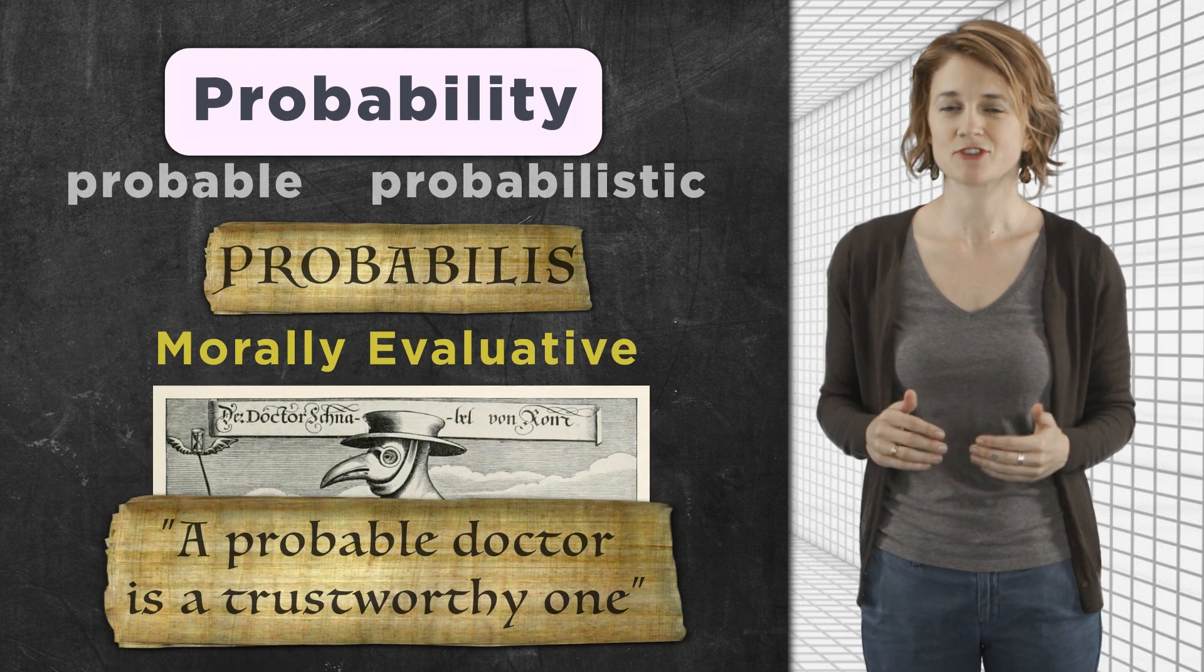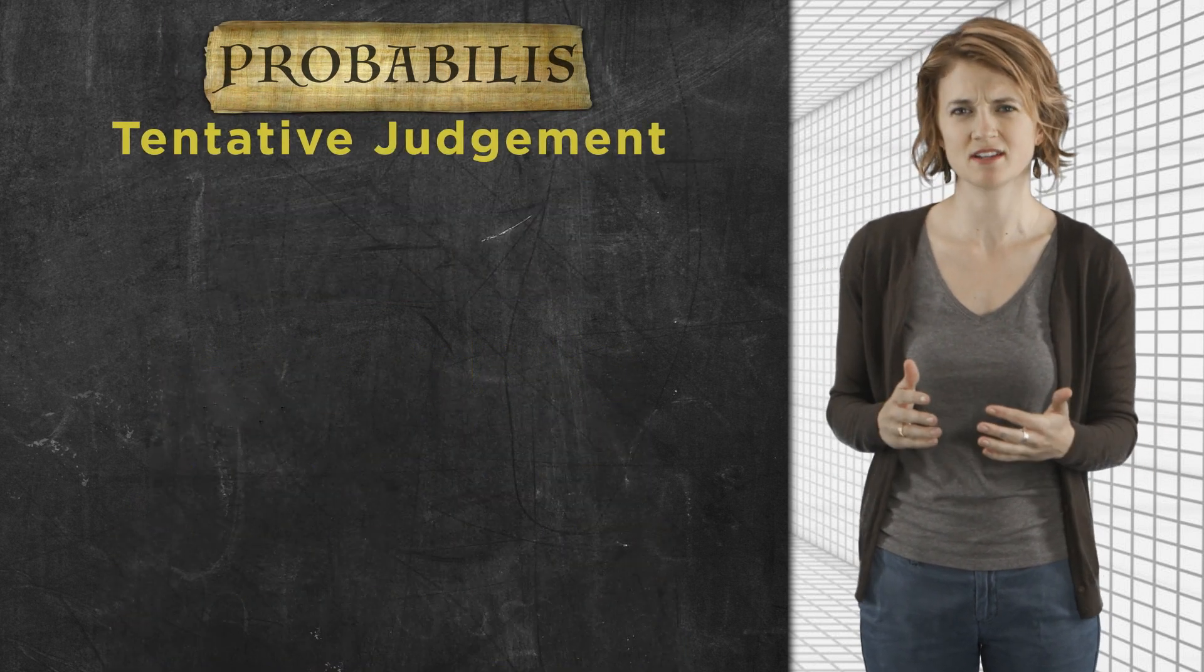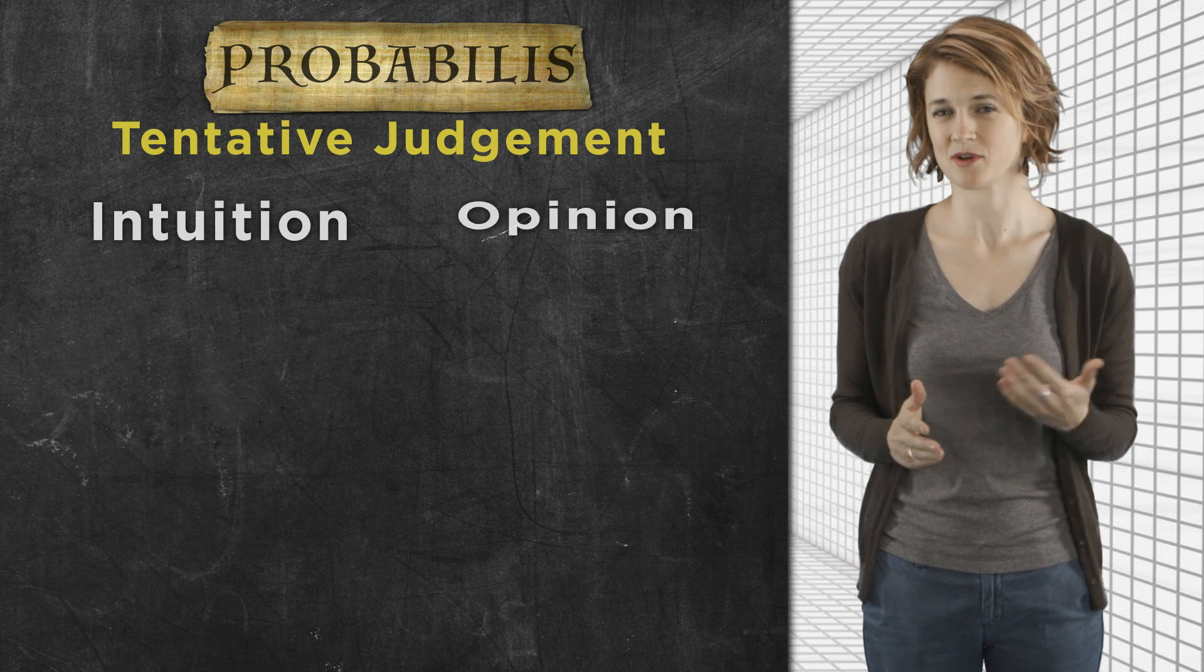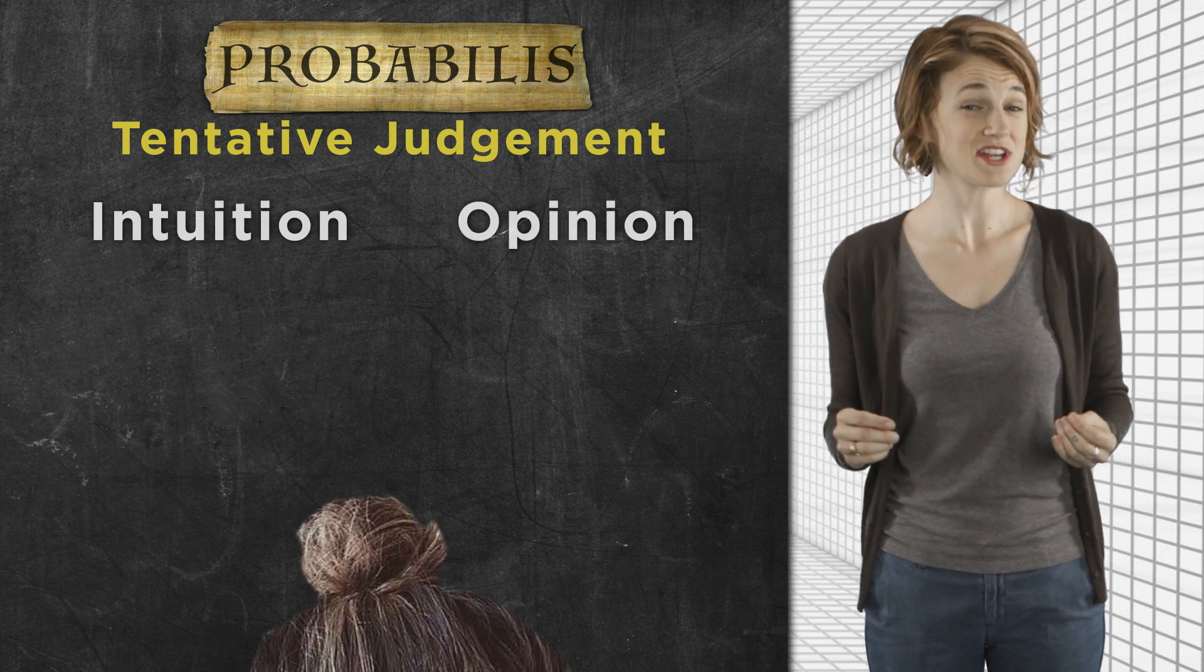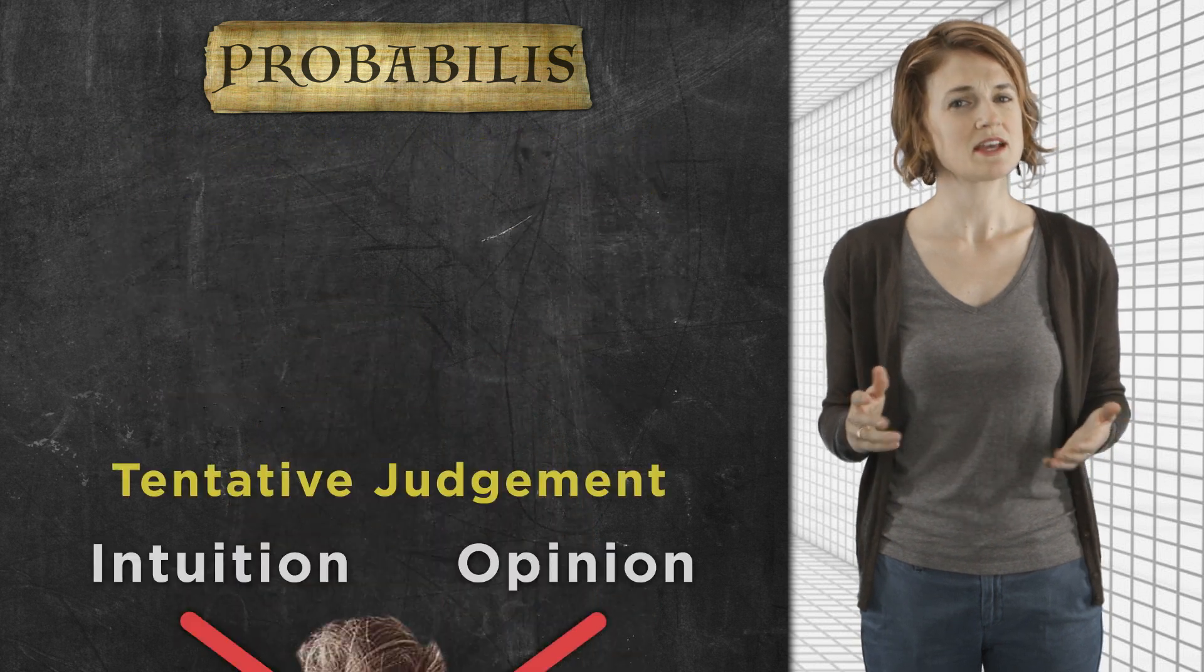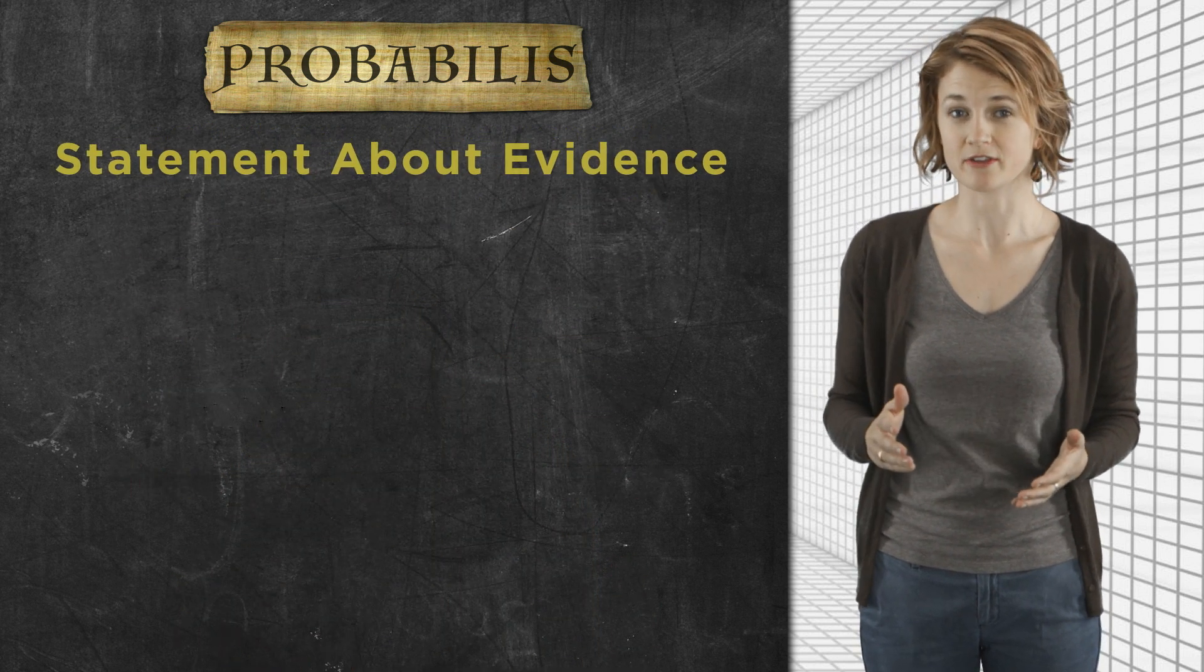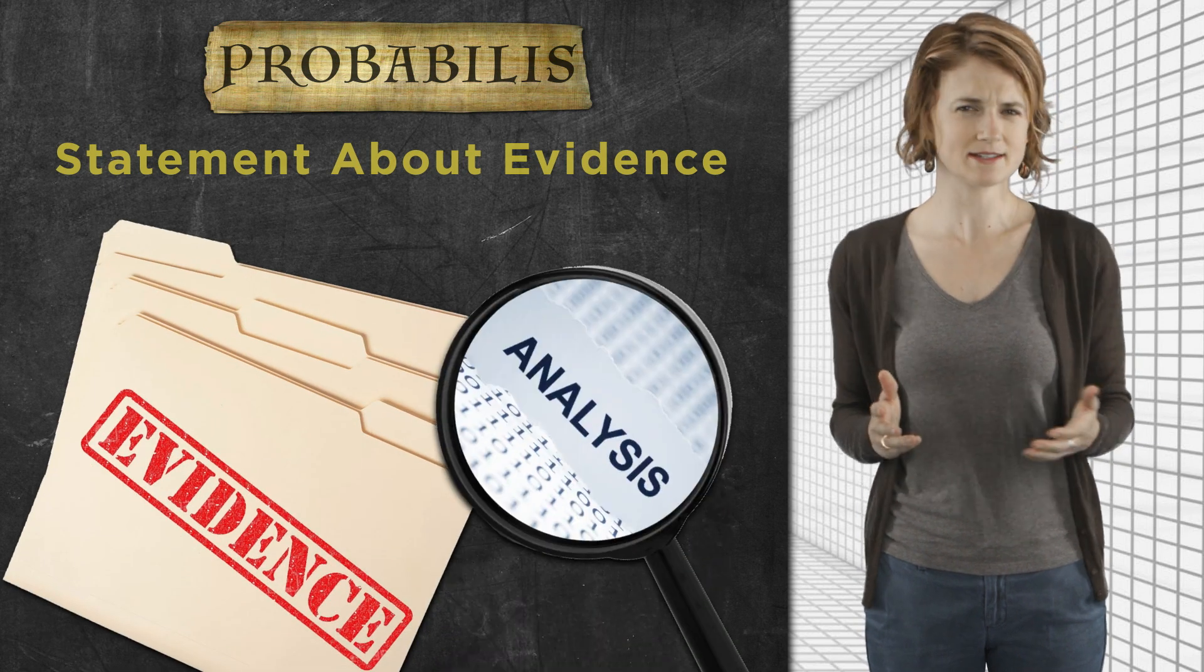More recently, the derivatives of probabilis can express a tentative judgment, something more like an intuition or opinion, as in that hairstyle will probably go out of fashion soon. And of course, to say something is probable can be a statement about factual knowledge, which requires evidence or analytic reasoning.